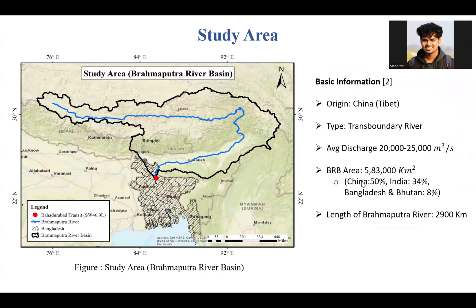This is the map of the study area, the Brahmaputra River Basin. The origin of the Brahmaputra River is China, and it enters Bangladesh as a transboundary river through the district of Kurigram. This basin has the largest share with China at almost 50%, then India at almost 34%, and 8% each with Bangladesh and Bhutan.